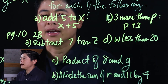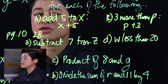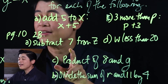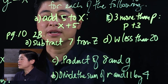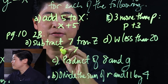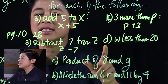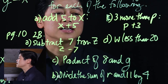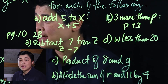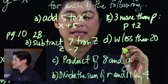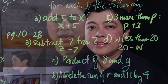On page 10, with the same instructions: 'subtract 7 from z' means we're taking away 7 from z, so we write z − 7. Letter d says 'w less than 20,' so that's 20 − w.